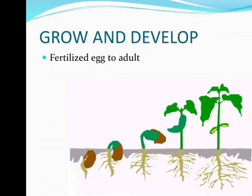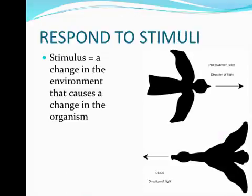The second characteristic of life is growth and development — all organisms grow from a fertilized egg to an adult. The third is that all organisms respond to a stimulus. A stimulus is a change in the environment that causes a change in the organism. For example, if a predatory bird is flying in one direction, the bird it preys upon — the duck — is going to fly in the other direction. So what the predator is doing influences what the prey will do.